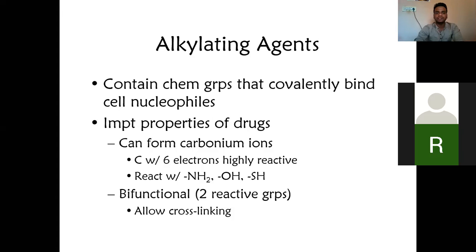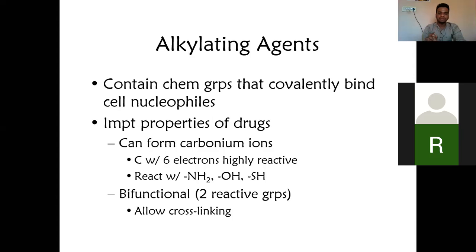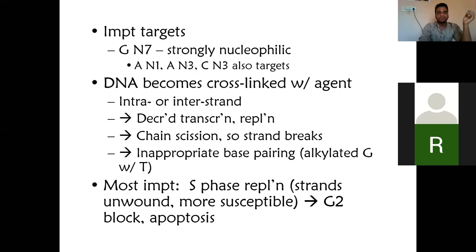You should know what nucleophiles are from your chemistry — these are important properties of drugs. These nucleophiles allow the alkylating agent to form a carbonium ion. This carbonium ion is carbon with six electrons, which is highly reactive, and it reacts with groups like amino groups, hydroxy groups, and SS groups. Through this reaction, it forms cross-links.